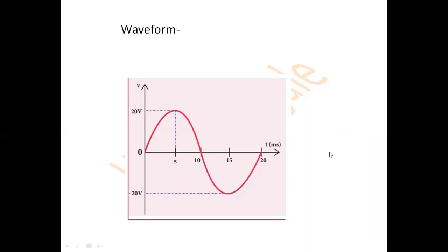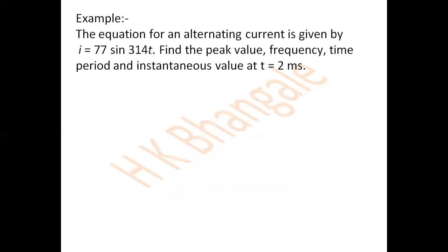This is the corresponding waveform. Next example: the equation for an alternating current is given by i = 77 sin(314t). Find the peak value of the current, frequency, time period, and instantaneous value at time t = 2 milliseconds.